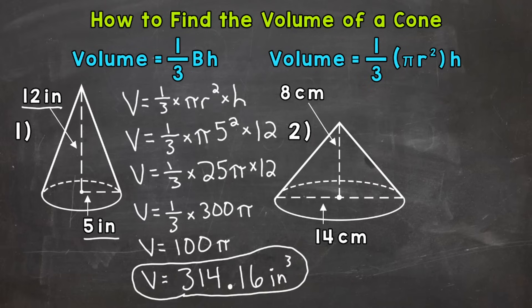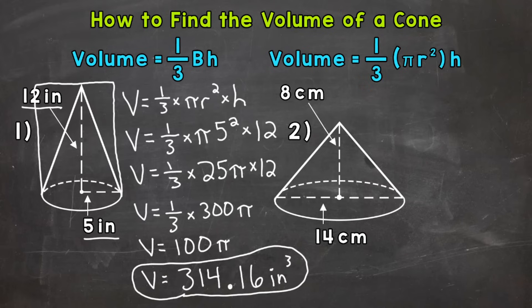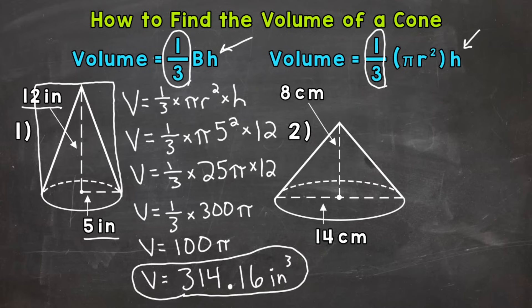So I want to explain why we multiply everything by 1/3. If we take a cone and put it in a cylinder with the same exact height and radius — that cone is going to be exactly 1/3 the volume of that cylinder. Pretty cool how it works out. Now when we find the volume of a cylinder, we use the formula: the area of the base times the height. So it looks really similar, and the only thing we add in is the 1/3, because again, that cone is exactly 1/3 the size or volume of that cylinder.